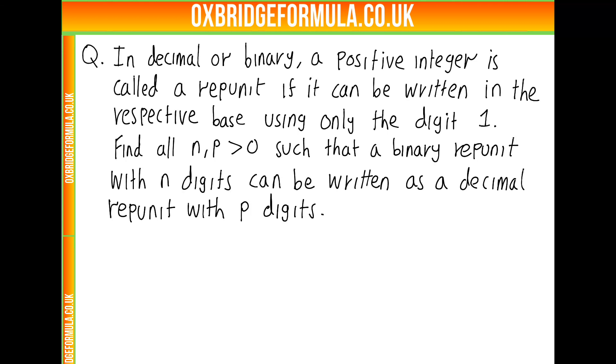Given this, we're asked to find all n and p integers greater than 0, such that a binary repunit with n digits can be written as a decimal repunit with p digits. And once we find such n and p, we're asked to prove the conclusion of which n and p work.